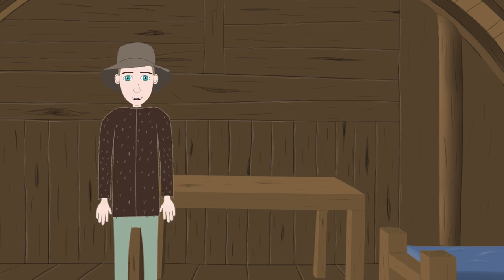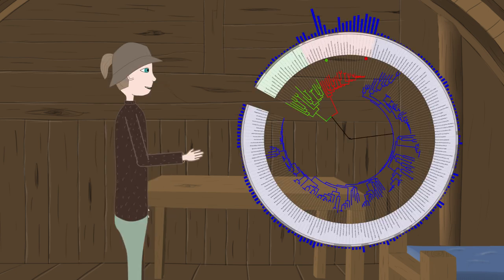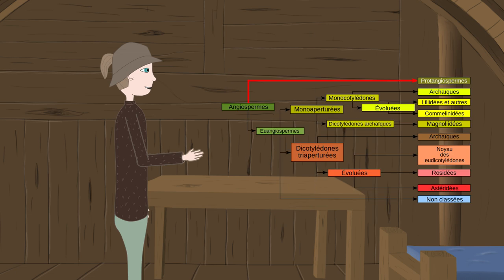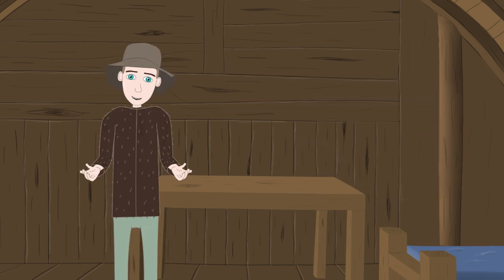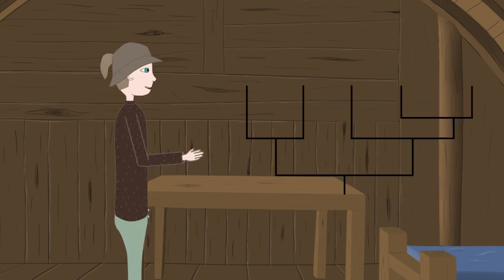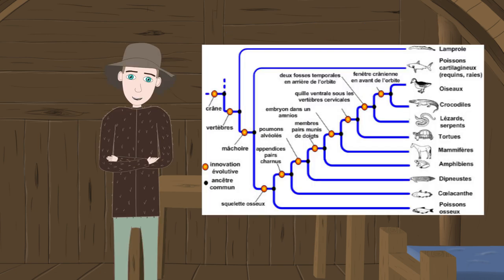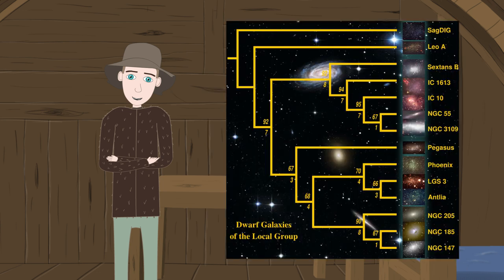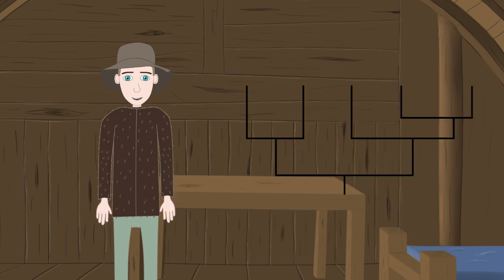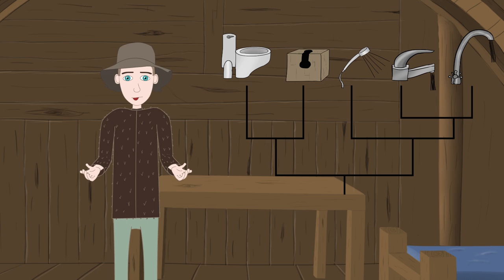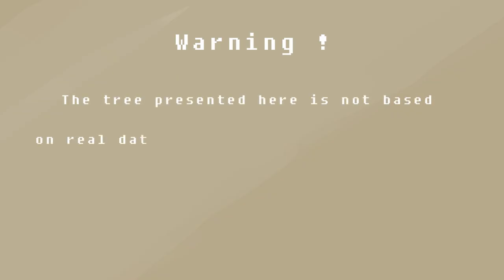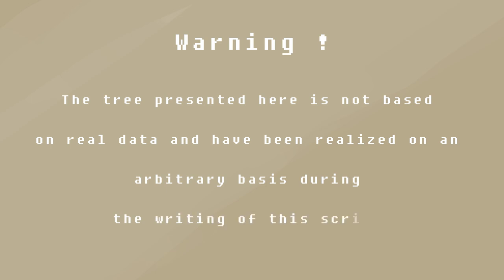So since we have time to lose, we're going to build a brand new classification by ourselves. First, let's see what a phylogenetic tree is. I'm pretty sure you have already seen this kind of tree — they can look like this, or this, or this. For phylogenetic trees 101, we will take a simpler example. These are leaves — it's what we want to classify. They can either be species, subspecies, classes, kinds, or even galaxies. And since we're lowbrow people, we're going to use bathroom equipment for this first example. The tree presented here is not based on real data and has been created on an arbitrary basis during the writing of this script.